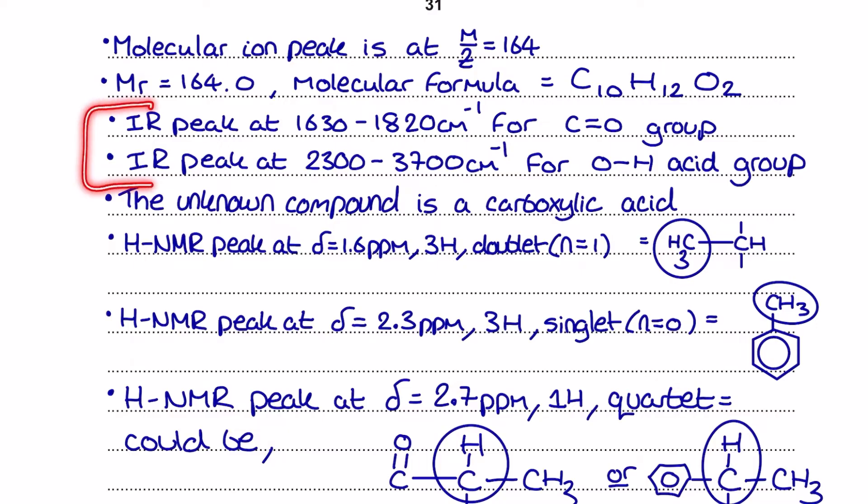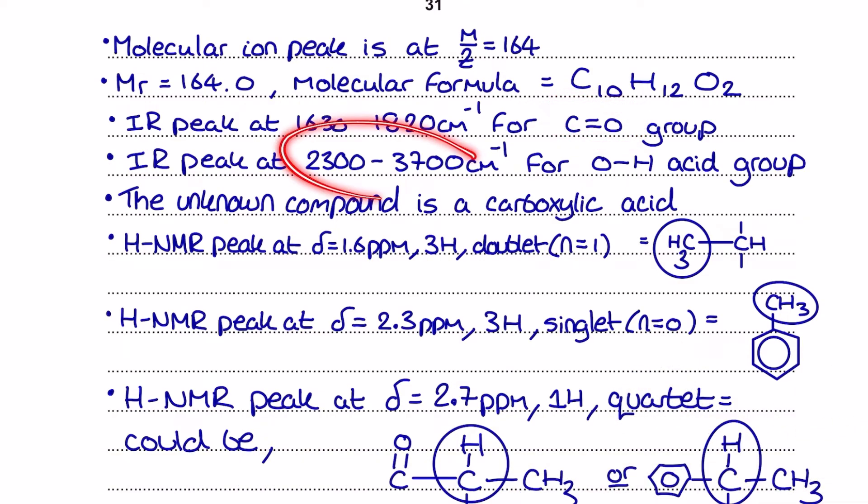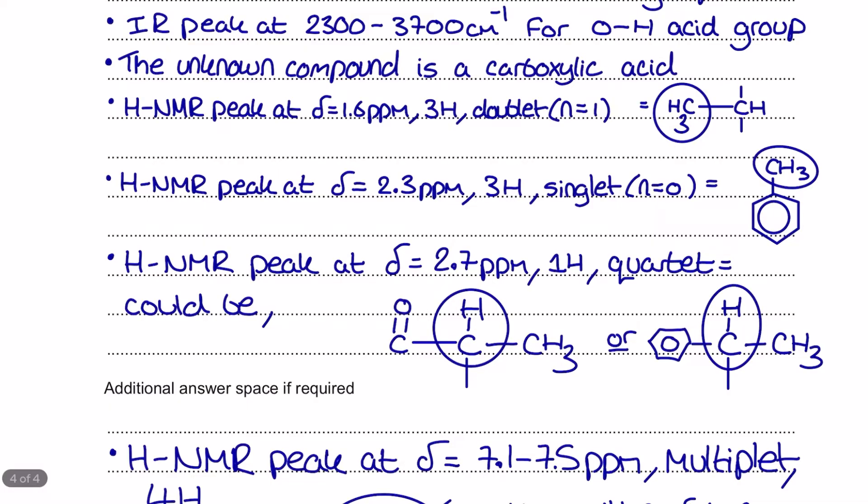Then I do my infrared peak analysis just here. Notice everything is bullet pointed because it allows me to just blur some facts down straight away. You don't need to be too wordy with this. It's not an essay. This is a chemistry exam. So I've got my infrared peak and I'm quoting the range from the data sheet here for the C double bond O and then I've got this one as well which is for the OH acid group. Make sure whenever you say an OH group, as I mentioned before, you say whether it's acid or alcohol. Therefore I make the conclusion that the unknown compound is a carboxylic acid and that leads me to my hydrogen NMR analysis.